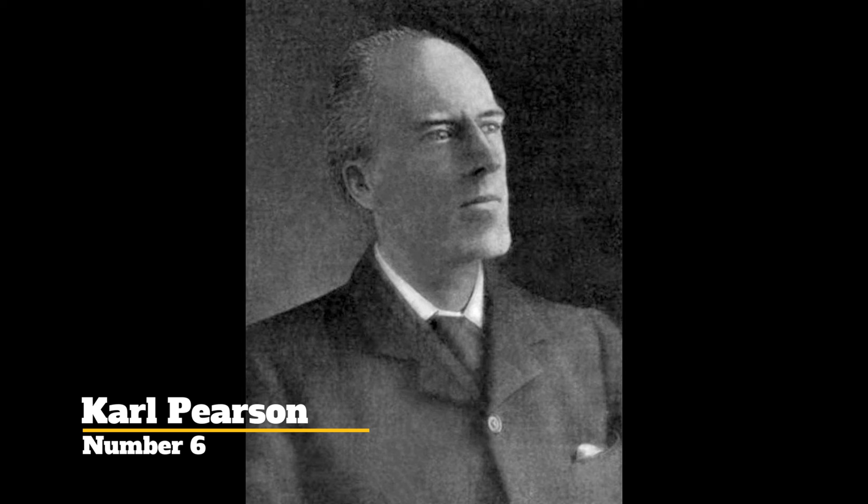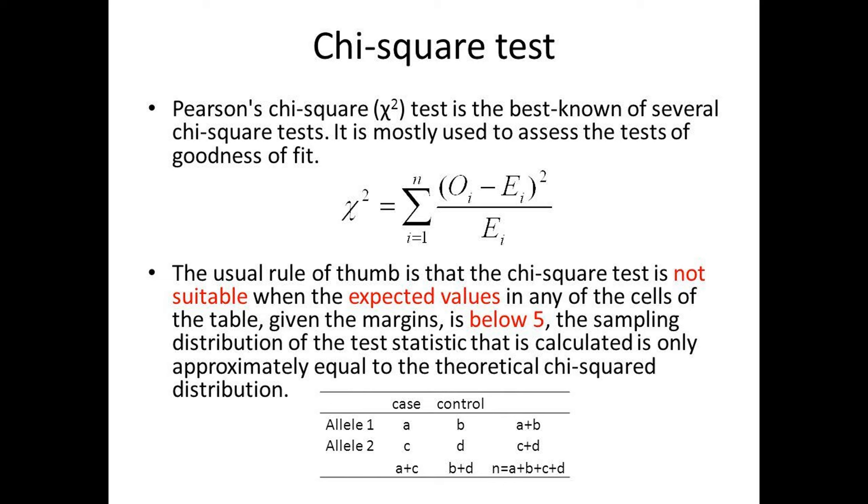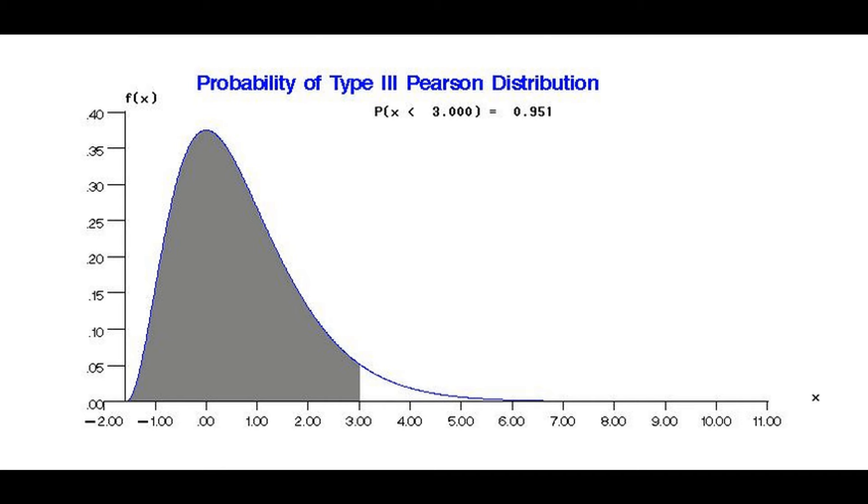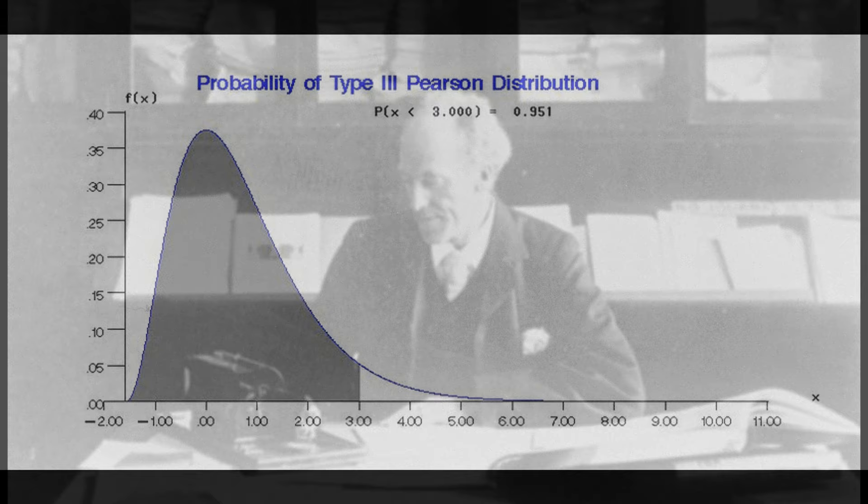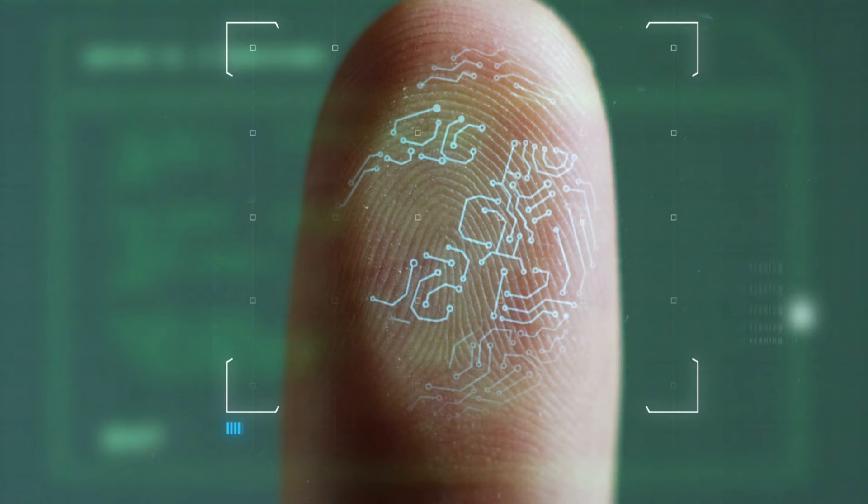Number 6. Karl Pearson. Karl Pearson, a pioneering English mathematician, made significant contributions to the fields of statistics, biometrics, and eugenics. Often regarded as the father of modern statistics, Pearson developed many statistical methods, including the chi-squared test and Pearson correlation coefficient, which are fundamental tools in data analysis. His work laid the groundwork for the rigorous application of statistical techniques in various scientific disciplines, from genetics to social sciences. Pearson also played a key role in establishing biometrics as a scientific discipline, applying statistical methods to the study of biological phenomena.